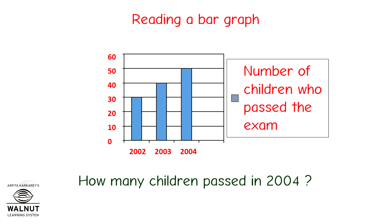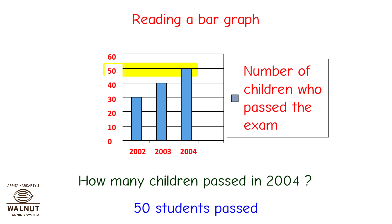How many children passed in 2004? We first locate the bar that will tell us the data of 2004. Now, we have to see what the value at the top of this bar is. So we follow the top to the left and see that it is at 50. That is the answer — 50 students passed.